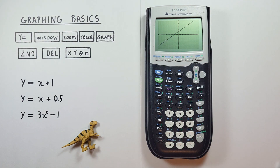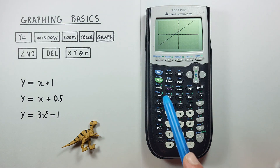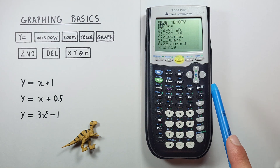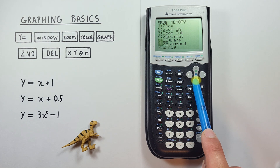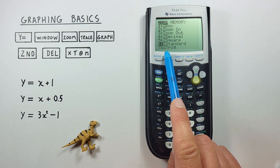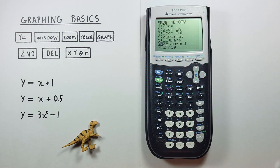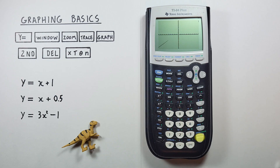If we want to go back to the standard or default zoom, what we do is go to the zoom menu again, scroll down to number six — Z Standard or Zoom Standard — and select it. And there we go, we're back to our default or standard zoom.